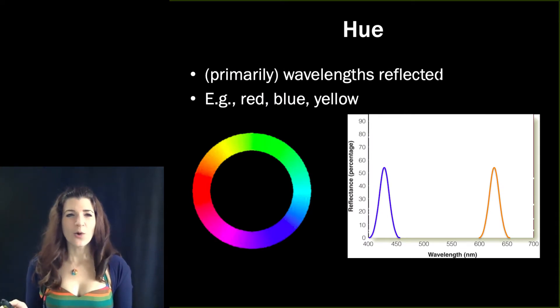So hue is typically what laypeople mean when they talk about color. It's determined in part by the wavelengths of light that are reflected.